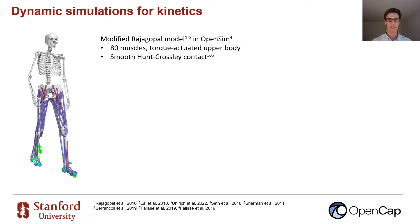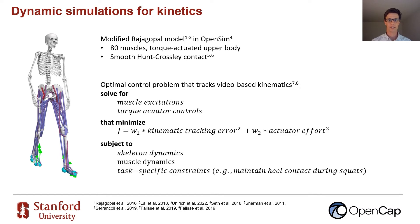For kinematics and kinetics, we used a modified Rajagopal musculoskeletal model in OpenSim and a smooth Hunt-Crossley contact model. To generate the muscle-driven simulations from video-based kinematics, we solved an optimal control problem using direct collocation. We solved for the muscle and actuator controls that minimized kinematic tracking error and actuator effort, subject to skeletal and muscle dynamics and some task-specific constraints, like keeping the heel in contact with the ground during squats.